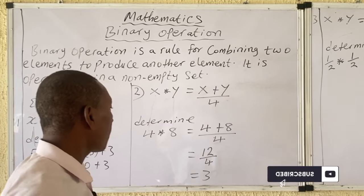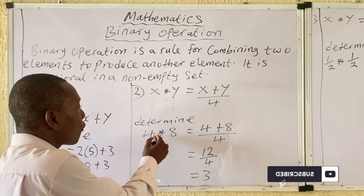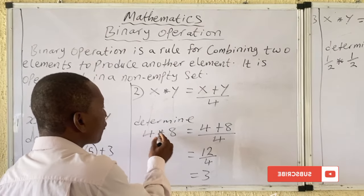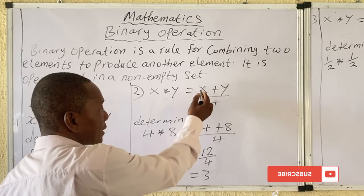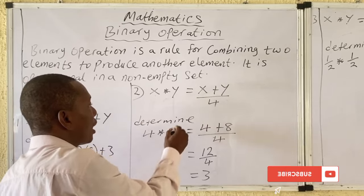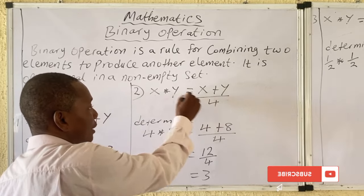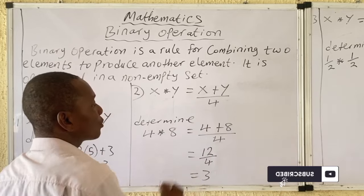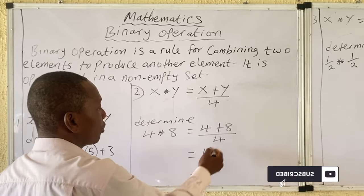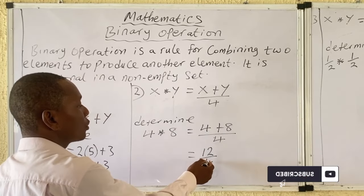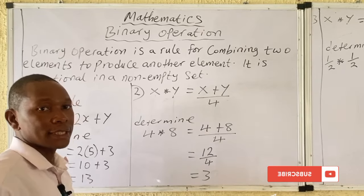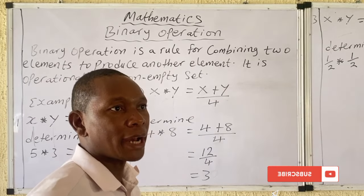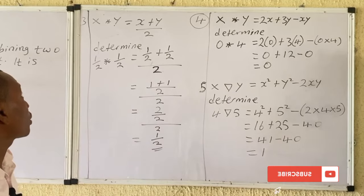For 4★8, x = 4 and y = 8. So we have (4 + 8) / 4 = 12 / 4 = 3. The answer is 3.